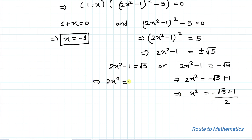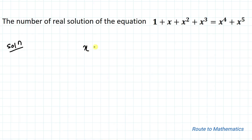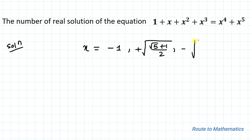Taking the positive case: 2x² = 1 + √5, so x² = (1 + √5)/2, giving x = ±√((1 + √5)/2) as real solutions. So the total real solutions are x = −1, x = +√((√5 + 1)/2), and x = −√((√5 + 1)/2) — that is, 3 real solutions in total. I hope you understood the solution. Thanks for watching; please subscribe and hit the like button for more such interesting videos.